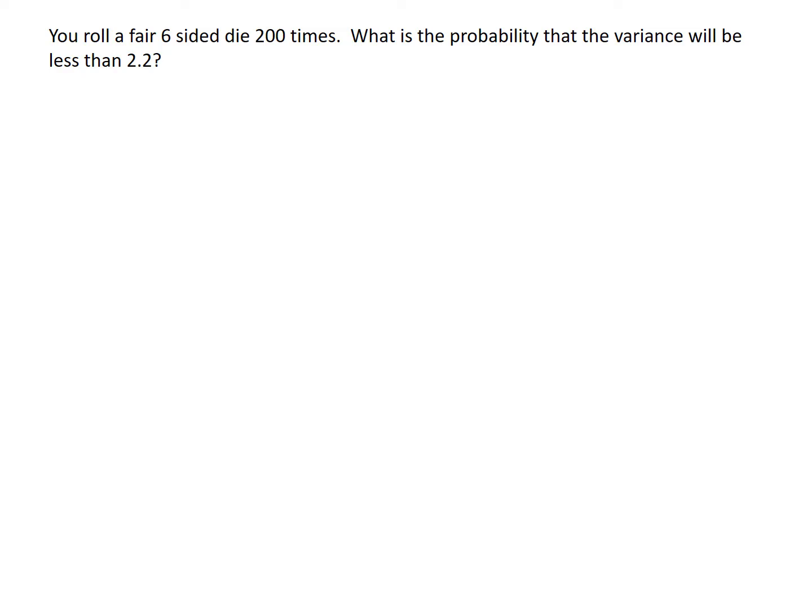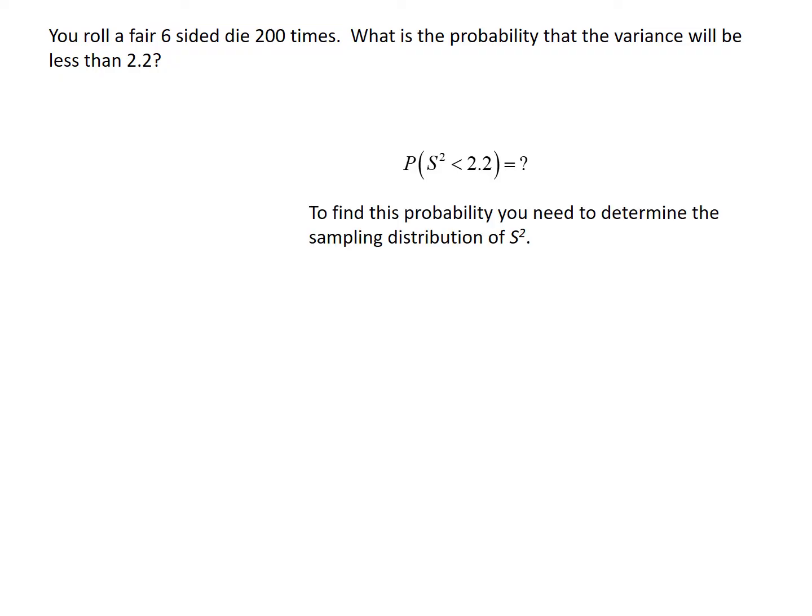In this problem, we're going to roll a fair six-sided die 200 times and we want to know the probability that the variance will be less than 2.2. So we're rolling 200 times — that's a sample — and we want to know about the variance, so that's the sample variance, not the population variance. That's s-squared, not sigma-squared. Translating into notation: this is asking the probability that s-squared is less than 2.2. To find that probability, we'd have to know how s-squared behaves — we need to know the distribution of s-squared.